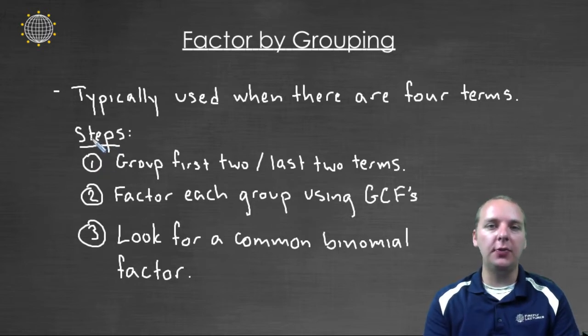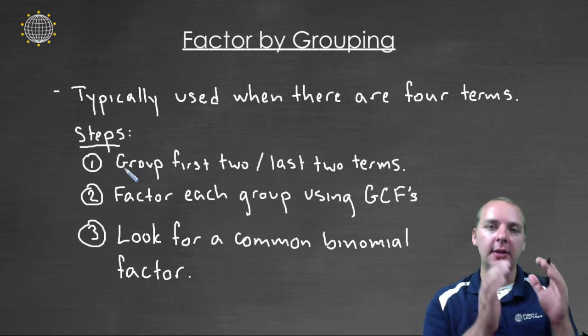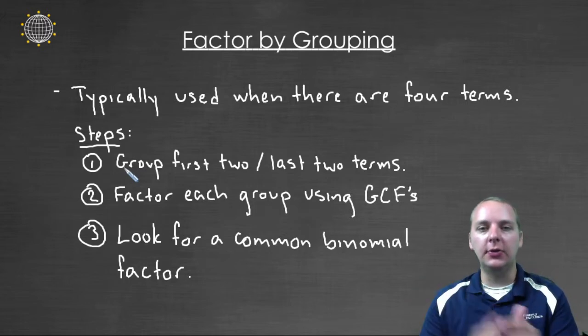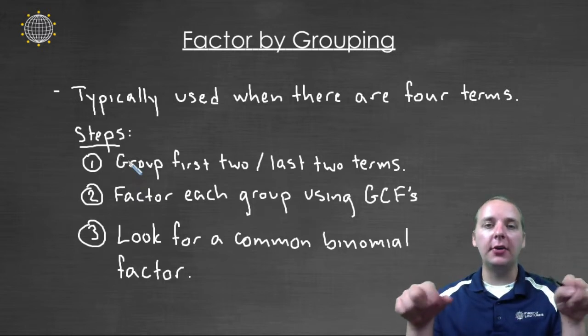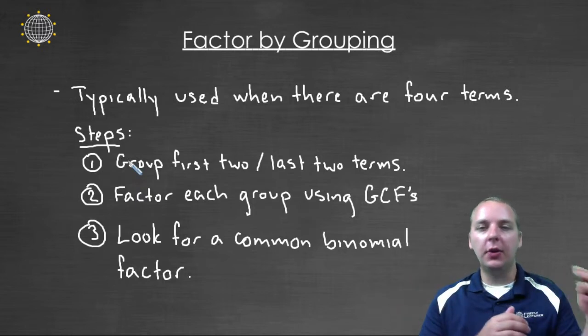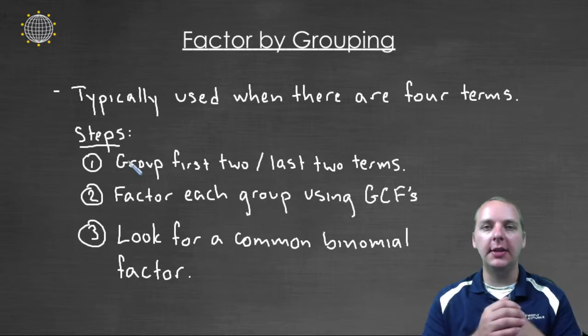Here's how we do factor by grouping. If you have four terms you're going to group with parentheses the first two terms and the last two terms. And then in each of these groups you're going to factor each of those separately looking for any common factors in each of those groups.